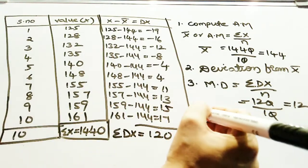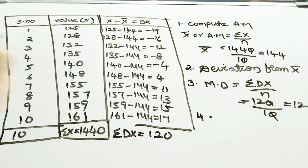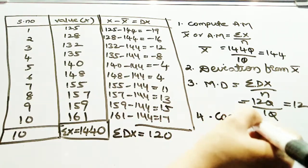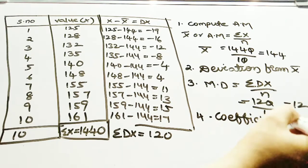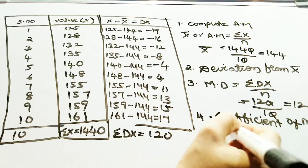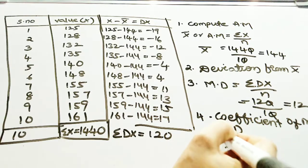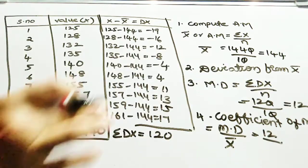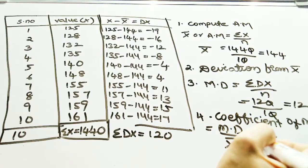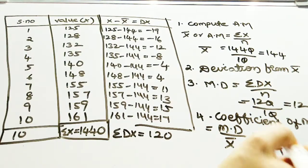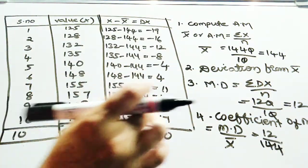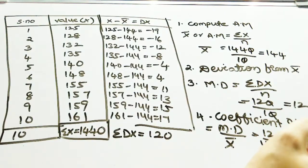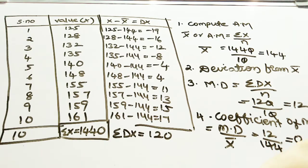The next step is to find the coefficient of mean deviation. The formula for coefficient of mean deviation is: mean deviation divided by x-bar. Mean deviation is 12 and x-bar is 144. Using your calculator, 12 divided by 144 gives 0.083.